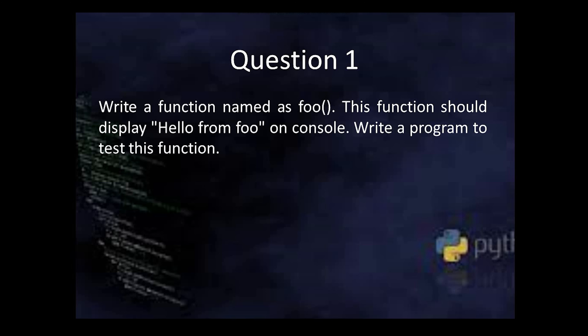The first question is: write a function named 'foo' that displays 'hello from foo' on the console, and write a main program to test this function. It's very elementary — many might think it's too easy, but we're starting from the basics and will gradually move to more complicated problems. The function just needs one print statement: 'hello from foo'.